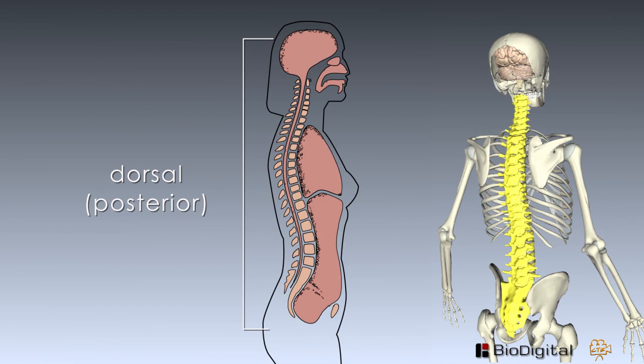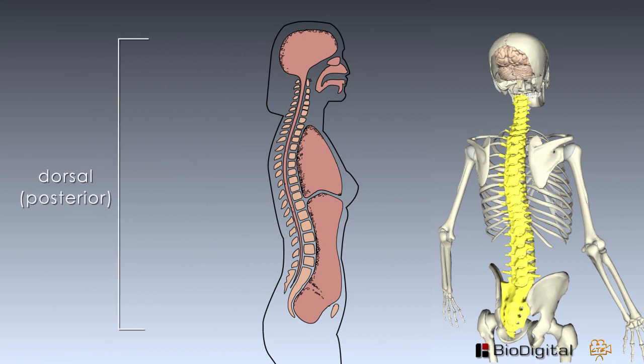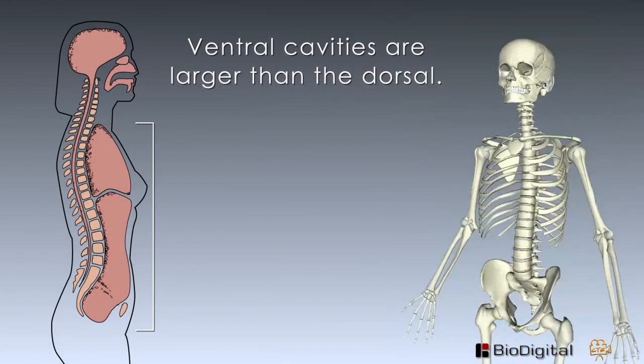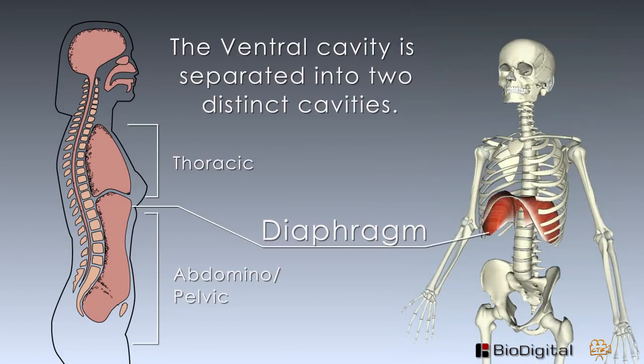The dorsal cavity is one long continuous cavity located on the back of the body. It is divided into two sections: the cranial cavity, which contains the brain, and the spinal cavity, which contains the spinal cord.